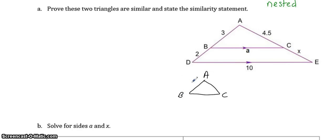the smaller triangle. So this side is 3, this side is 4.5, and this side is A. Then the larger triangle would be A, D, E. So this side would be 3 plus 2, which is 5. This side is 10, and this side is 4.5 plus X.